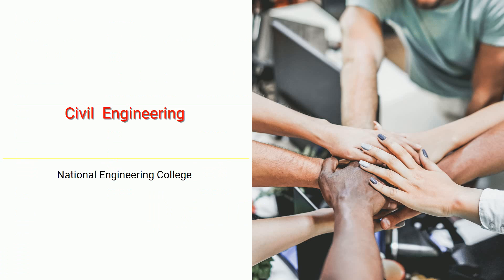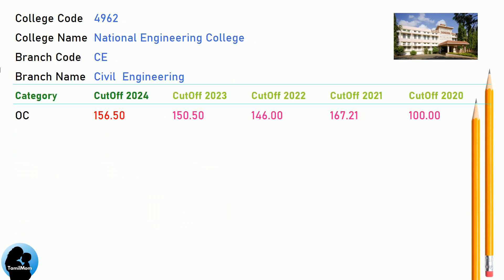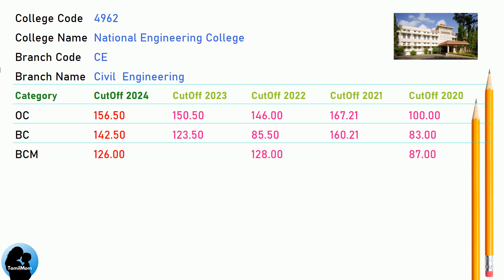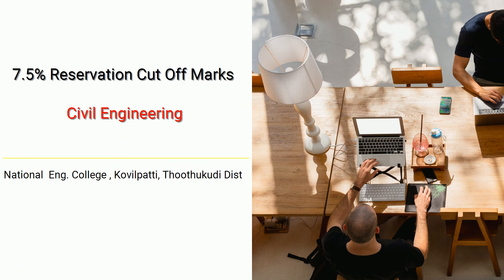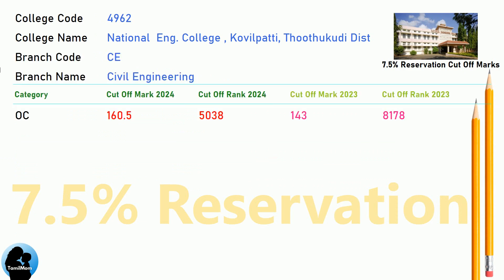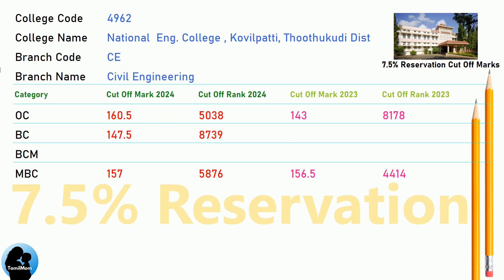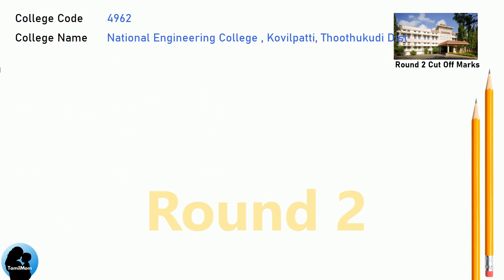DNA cut-off for National Engineering College in Civil Engineering. DNA 7.5 Reservation cut-off for National Engineering College in Civil Engineering. DNA Round 2 cut-off for National Engineering College in Civil Engineering.